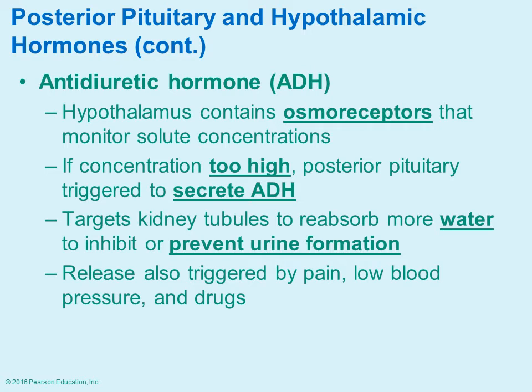The kidneys act as filtration: as blood passes through, most everything is removed and then slowly added back depending on what's needed. How much water is added back depends on whether the person is well hydrated. Excess water is removed as urine, so if you're well hydrated with excess fluid, you produce more urine.